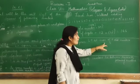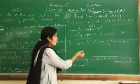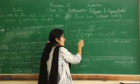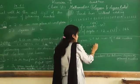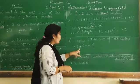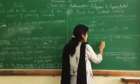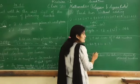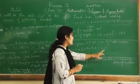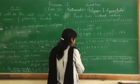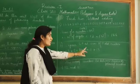Express 49 as a sum of 7 odd numbers. Here, the sum is given and we should express it in the form of odd consecutive numbers — this is the reverse process. 1 + 3 + 5 + 7 + 9 + 11 + 13 gives you 49. Therefore, 49 is the sum of these 7 odd consecutive numbers.